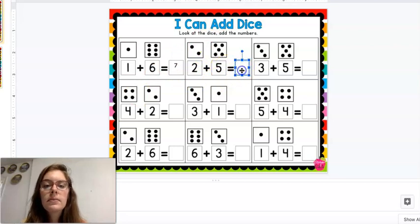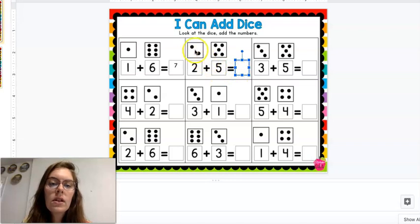Same thing here. You count 2 plus 5 equals 1, 2, 3, 4, 5, 6, 7. 2 plus 5 equals 7.